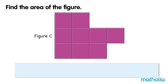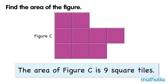Figure C is made of one, two, three, four, five, six, seven, eight, nine square tiles. The area of figure C is nine square tiles.